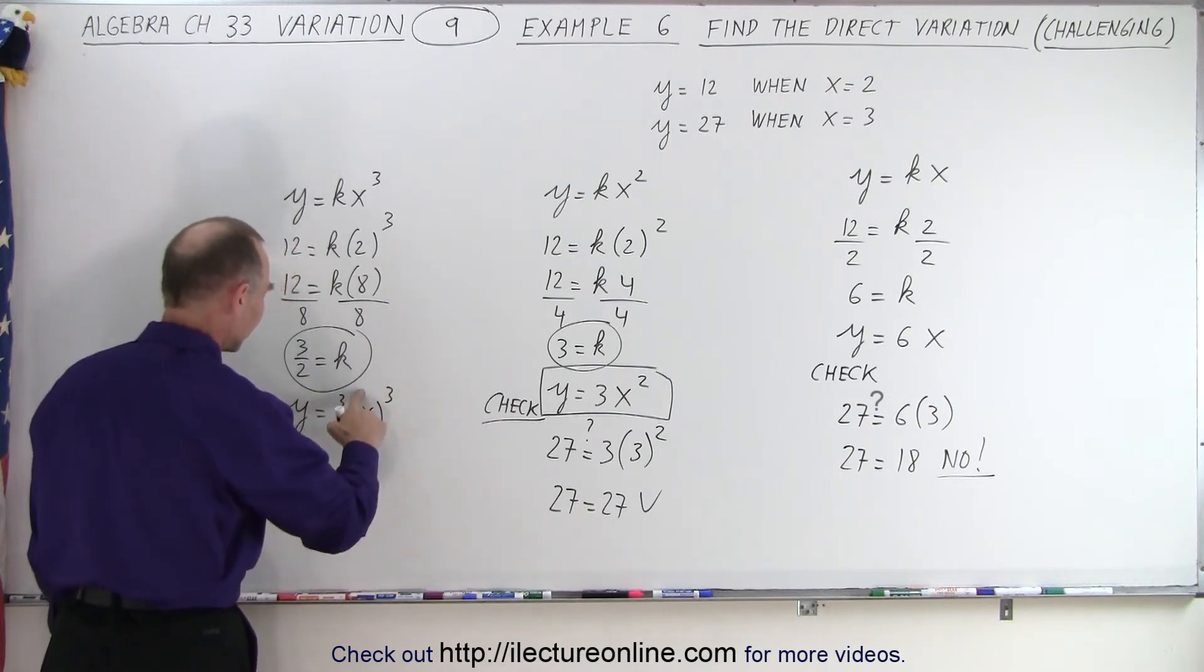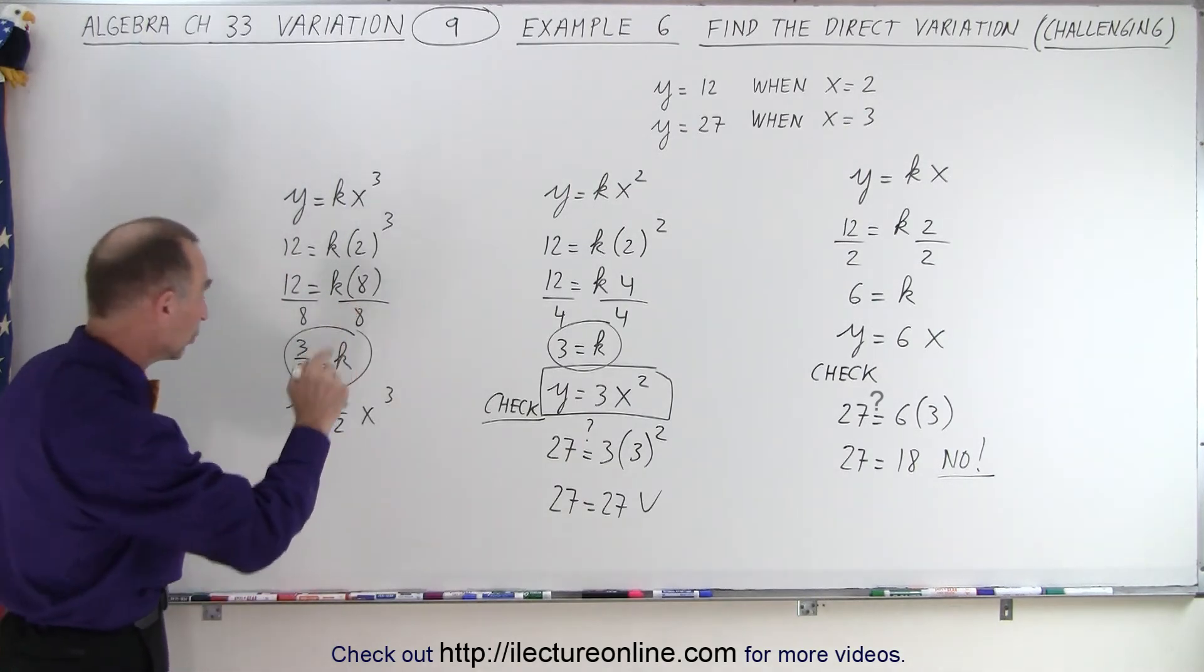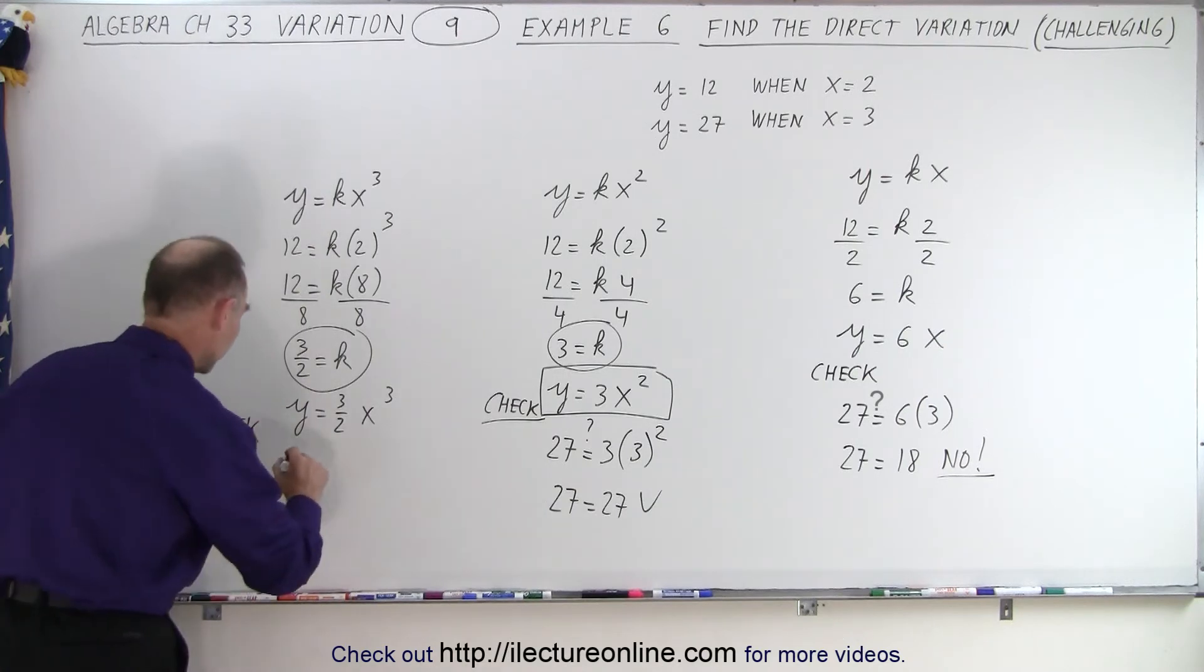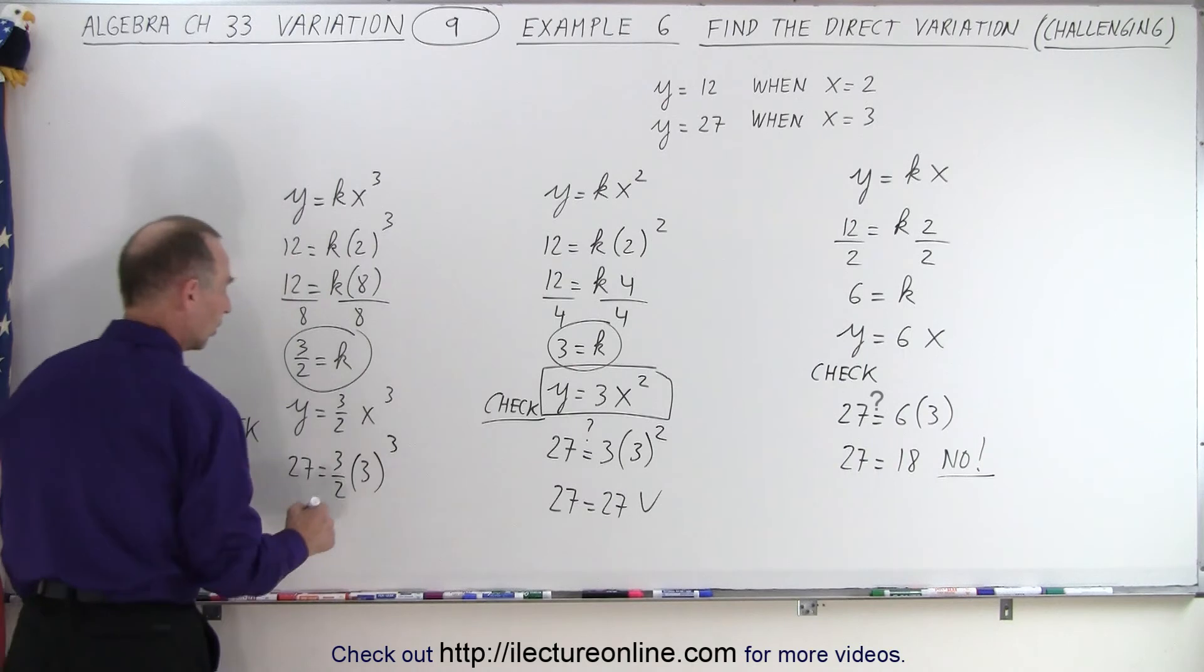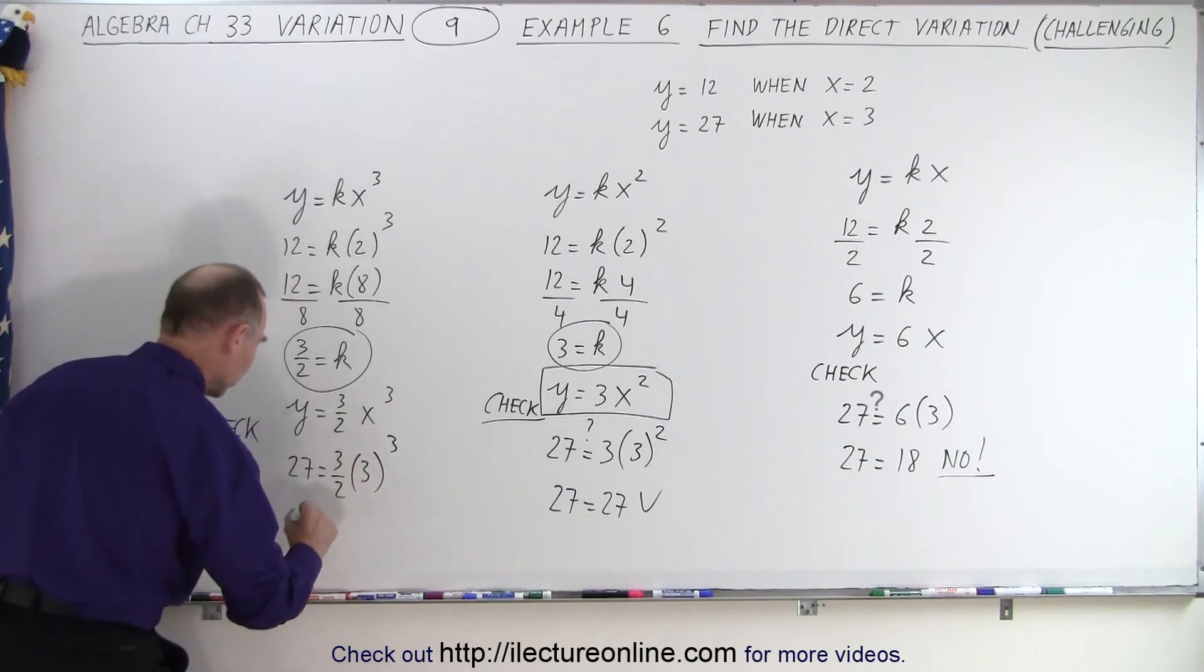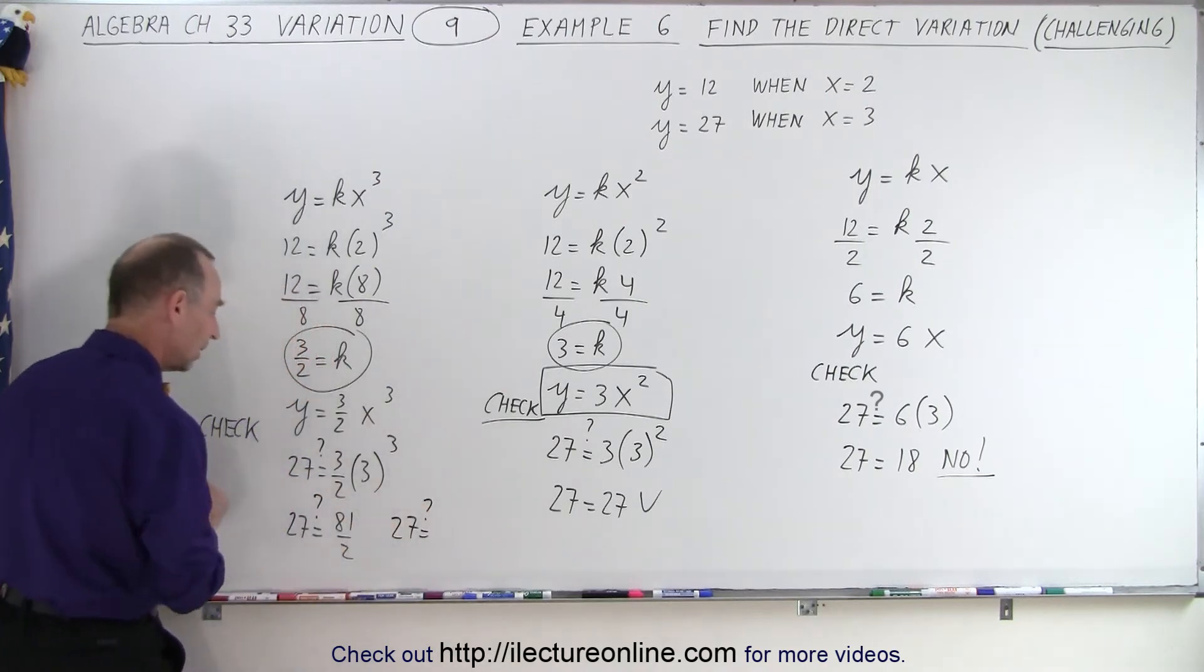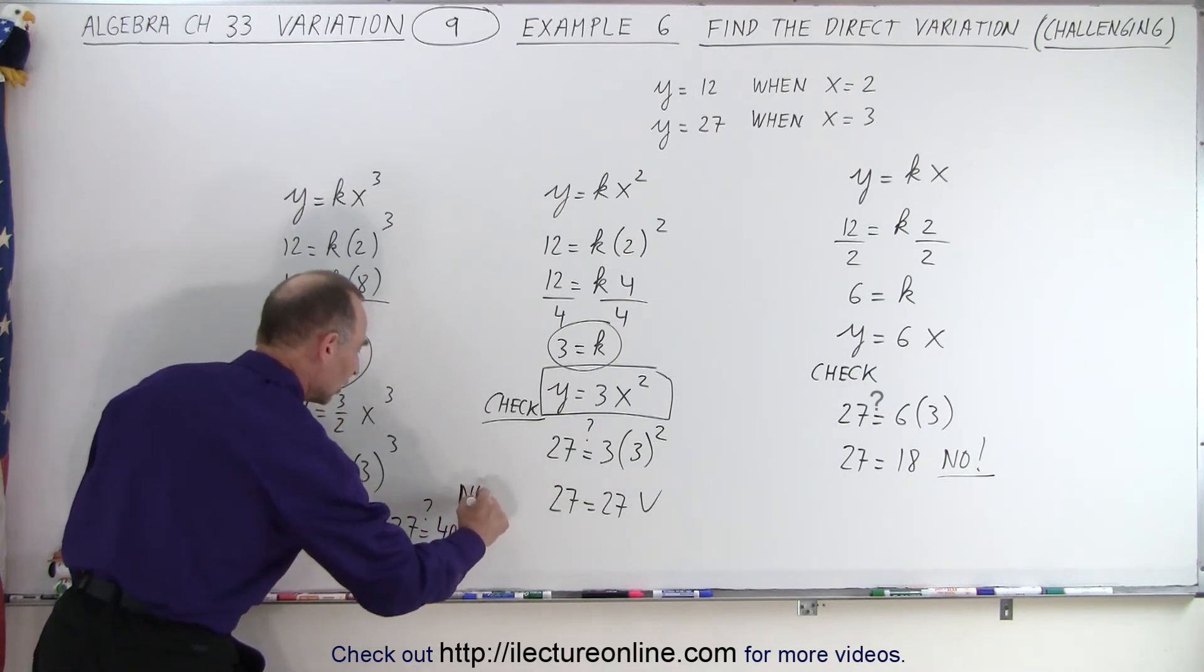And now let's plug in the other values. We do a check. And for y, we put in 27 is equal to 3 over 2 times x, which is 3. Notice we have 3 cubed. 3 cubed is 27 times 3 is 81. It's 27 equals to 81 divided by 2. So that means that 27 is equal to, so we're checking, 81 divided by 2 is 40.5. And of course, no, that's not the case either.